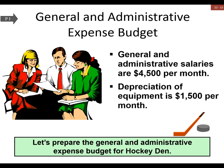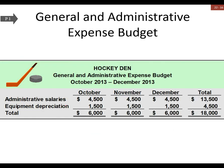The general expense budget is pretty straightforward. It's based usually on salaries — the total personnel needed in admin — and on equipment, specifically the total equipment that we have purchased and that we're depreciating as we go. Our totals are down at the bottom.